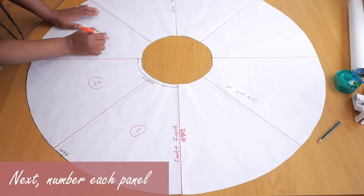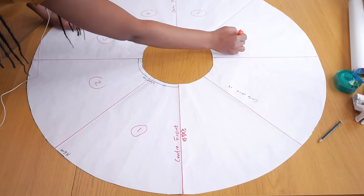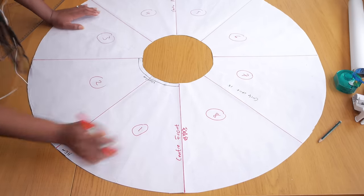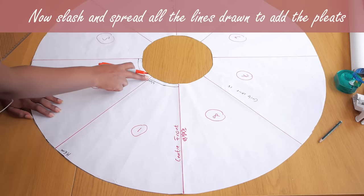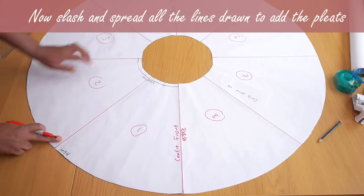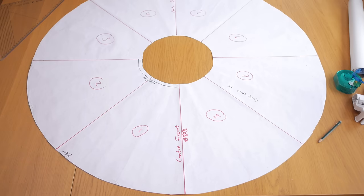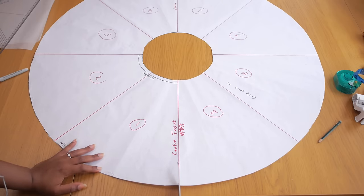I'm going ahead to number each panel because there are two methods to do this slash and spread. For the sake of this video, I'm going to be doing it a panel at a time because I don't have a very large table to slash everything all at once. The first thing I'm going to do is cut my first opening point—I'm going to cut that center front because I would like a pleat there.